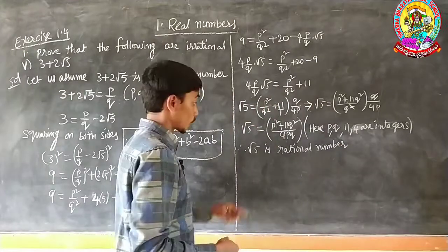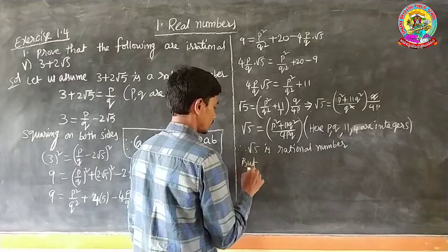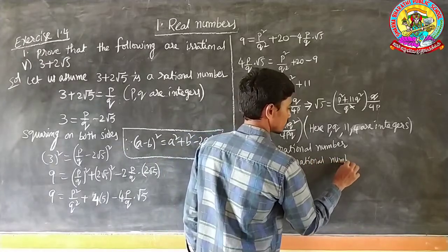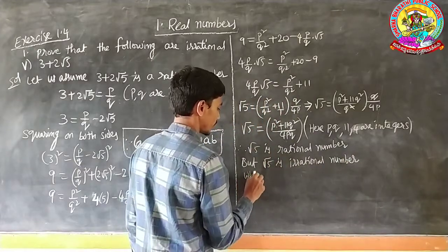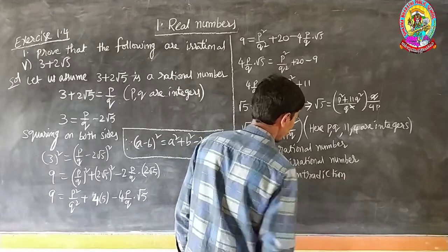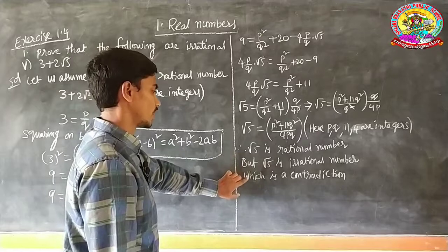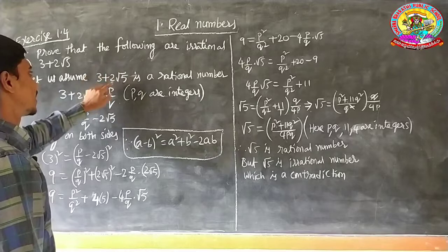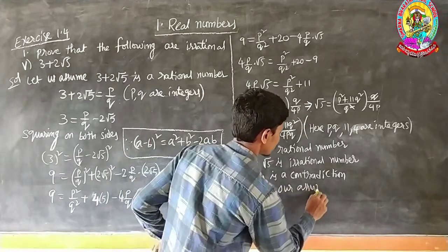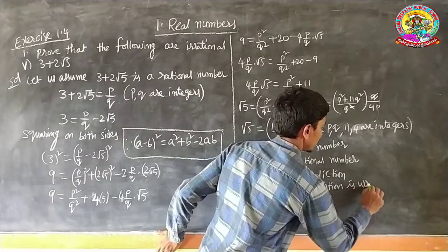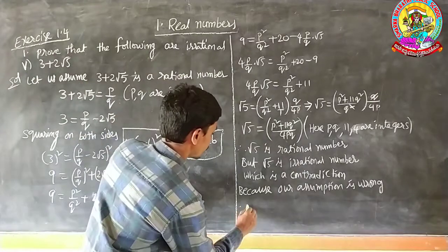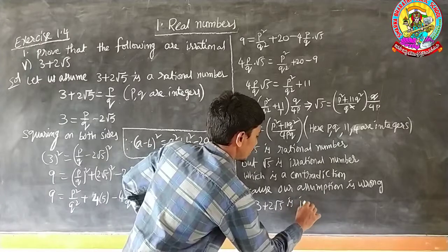But root 5 is an irrational number. Both statements oppose each other, which is a contradiction. This contradiction arose because our assumption is wrong. Therefore, 3 plus 2 root 5 is an irrational number. Hence it is the proof.